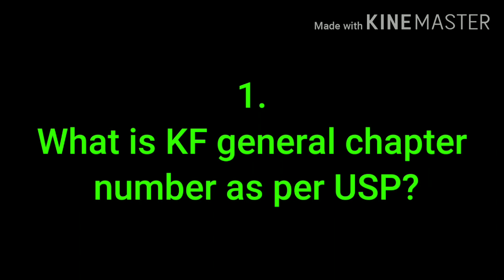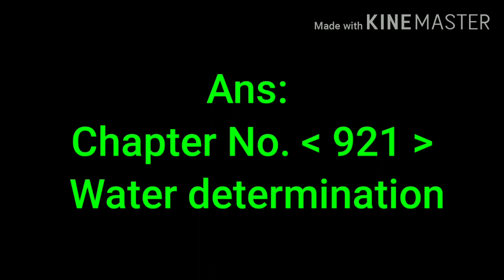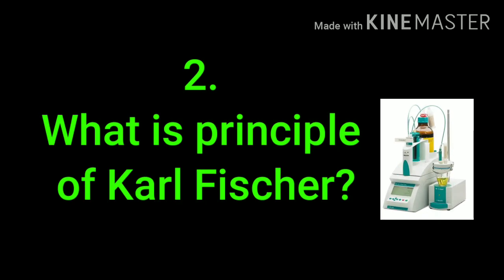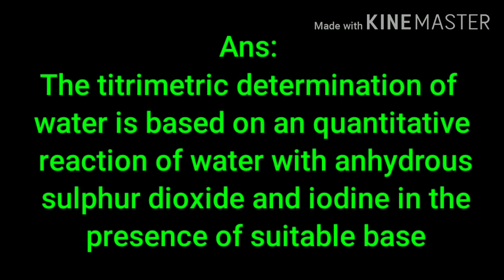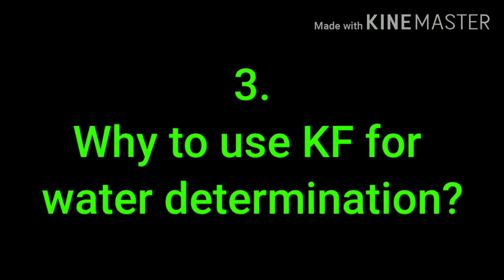The first question is: what is the KF general chapter number as per USP? As per USP, 921 is the KF chapter number — that is water determination. What is the principle of Karl Fischer? The determination of water is based on the quantitative reaction of water with anhydrous sulfur dioxide and iodine in the presence of a suitable base. The suitable base may be methanol or any suitable alcohol.